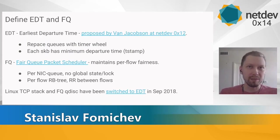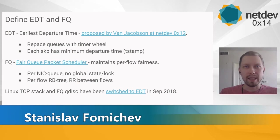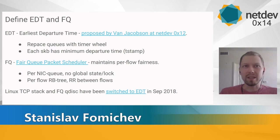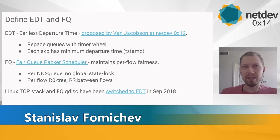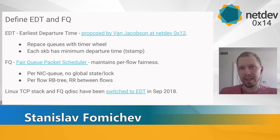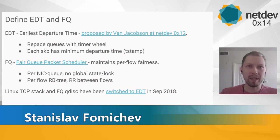Let's define some essential terms. The first is EDT, for Earliest Departure Time. This is the idea proposed by Van Jacobson at NetDev about eight years ago. The gist of it: let's replace all the internal networking queues with a timing wheel scheduler. Every packet is amended with the earliest departure time, and the system will not send it out until the departure time is met. This departure time can be adjusted at various places in the kernel.